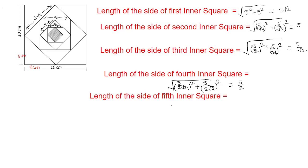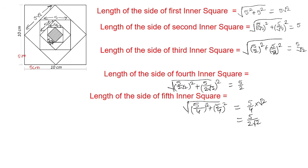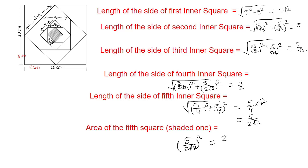Continuing, √((5/4)² + (5/4)²) equals 5/(4√2), which simplifies to 5/(2√2). Now we can calculate the area of the innermost square, the shaded area. It will be equal to (5/(2√2))², which equals 25/8, giving us 3.125 square centimeters.